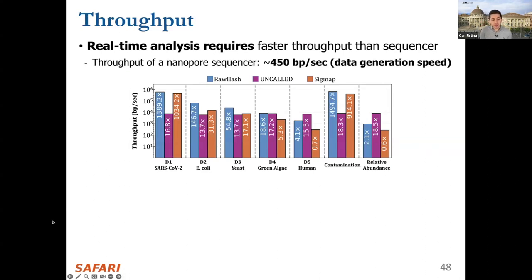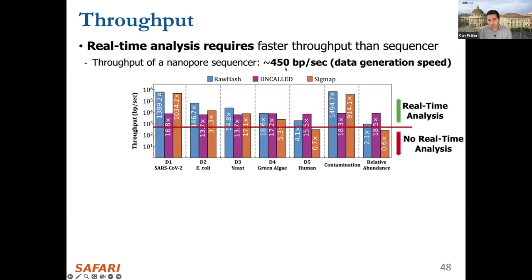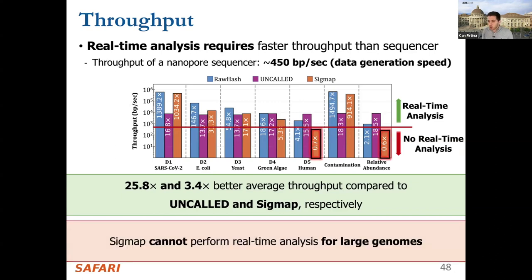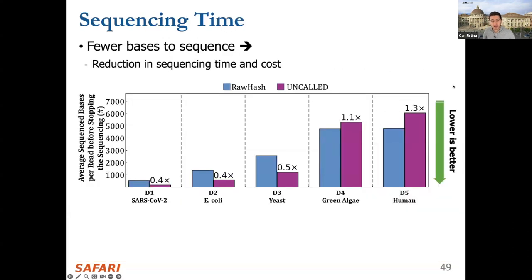Throughput results: the x-axis shows datasets, y-axis shows throughput (higher is better). The nanopore sequencer throughput is 450 bases per second — tools above this line achieve real-time analysis. Raw Hash provides significant performance improvements through fast hash-based search. Sigmap, based on distance calculation, cannot achieve real-time analysis for large genomes. Raw Hash also makes faster stopping decisions compared to Uncalled.